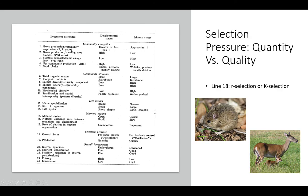Line 18 covers selection pressure for different types of species. In a young ecosystem, r-selected species are favored, and as time goes on it becomes more suitable for K-selected species. r-selected species have lots of offspring and a short lifespan, while K-selected species — like a white-tailed deer — have fewer offspring, longer lifespans, and are more efficient with their energy.